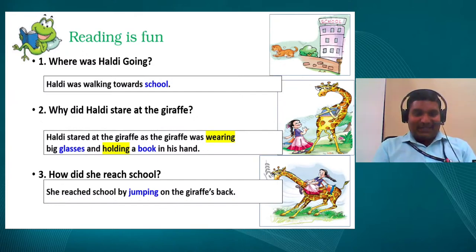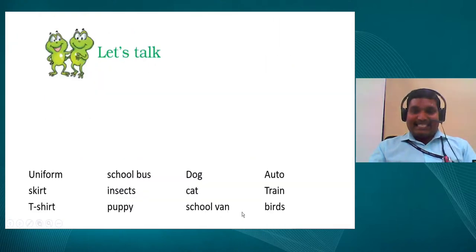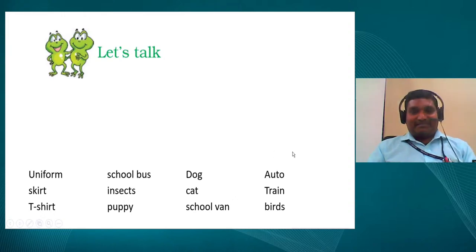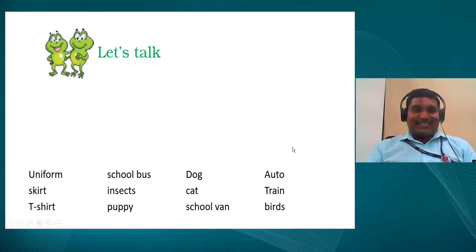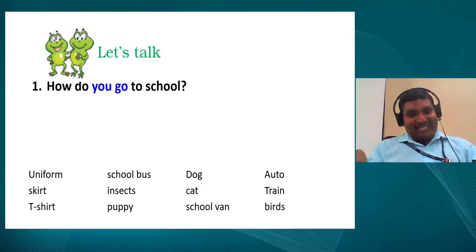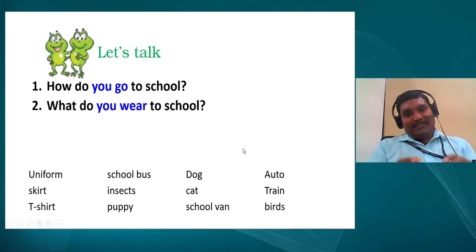Today everybody answered very nicely. You can see the picture and find the answer — everybody is correct! Now I want to know about you and your adventures. You can use these keywords as examples or tell me whatever you have done. First question: how do you go to school? By bus? School van? By auto? With your father riding a bike? Or by walk?